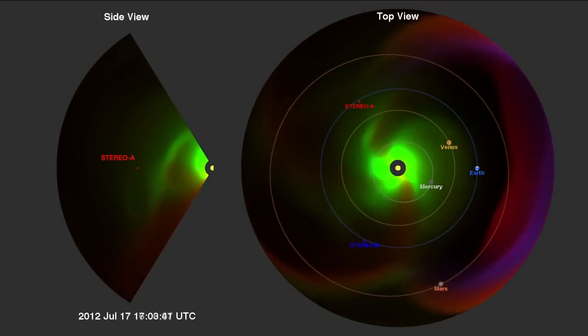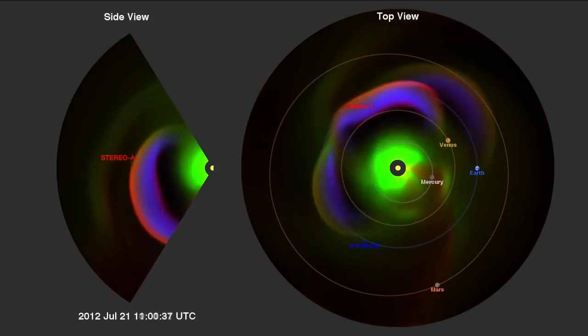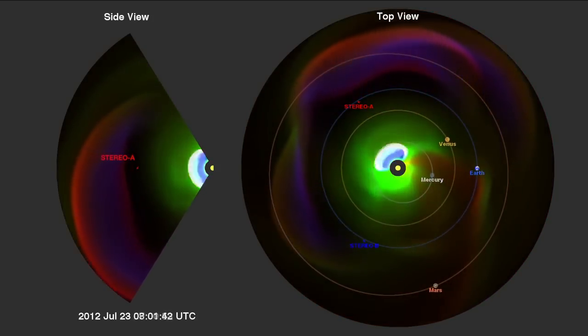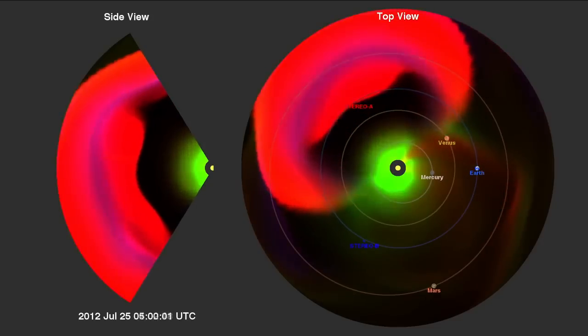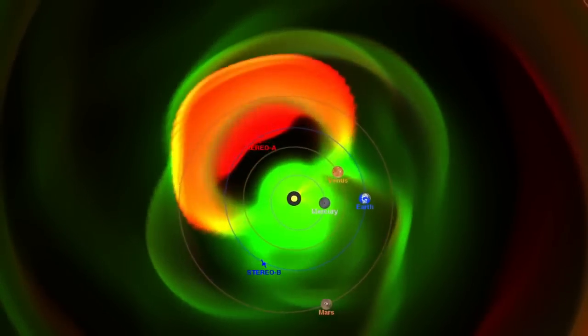The main event is preceded by a few smaller CMEs, one of which was Earth-directed. It is immediately clear how much larger and faster the July 23rd CME was as it blasted toward STEREO A.